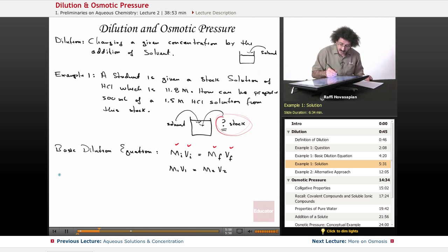We know what the final volume is going to be. The final volume V2 equals 500 milliliters or 0.5 liters, as long as the units are consistent. We have the final volume and we also have the final molarity, which is 1.5 molar. Our initial molarity is 11.8 molar from the stock solution. So the only thing that we're missing is the initial volume.